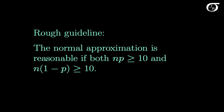This idea is summarized in a rough guideline: the normal approximation is reasonable if both n times P is ≥ 10 and n times (1−P) is ≥ 10. Simply put, if P is close to 0 or 1 we need a larger value of n. This is just a rough guideline — sometimes people replace 10 with 5, or use different rules altogether, so consult your professor or textbook.